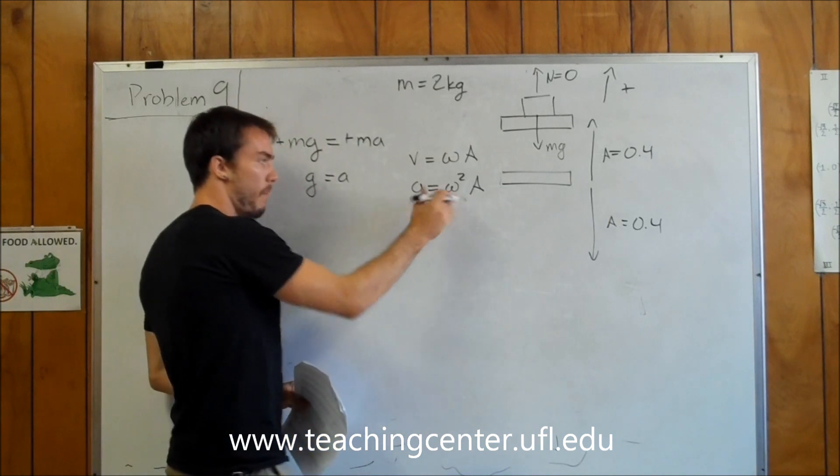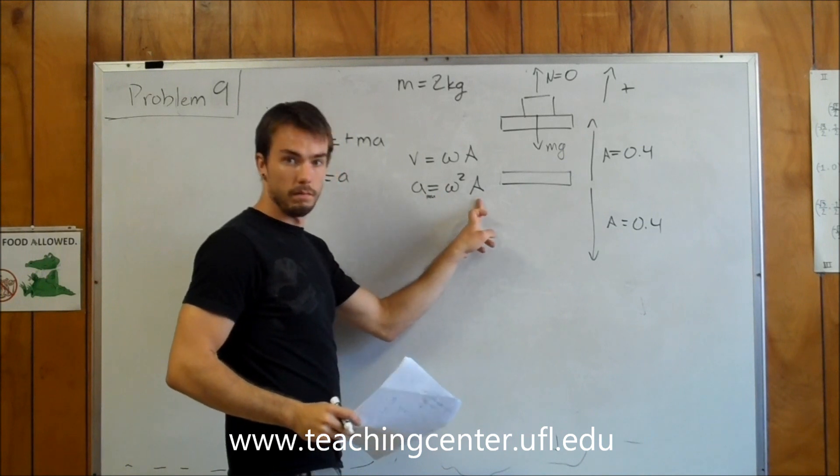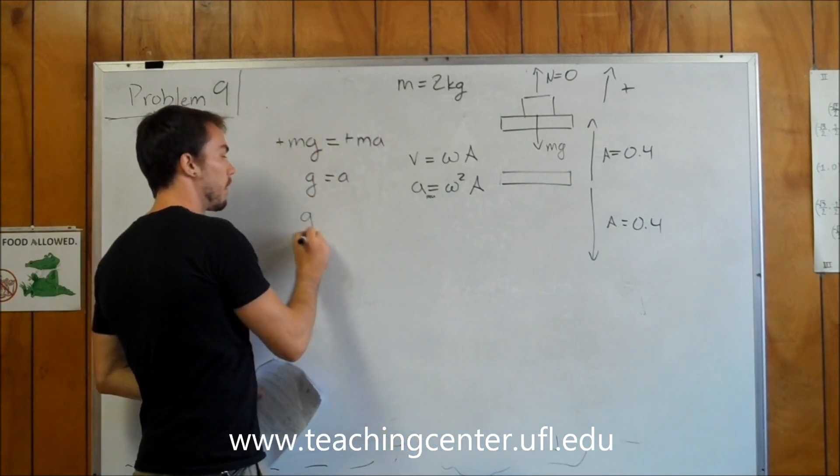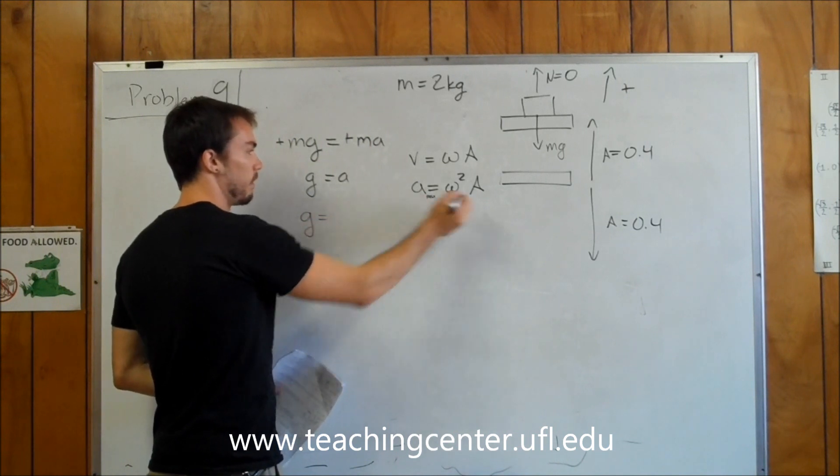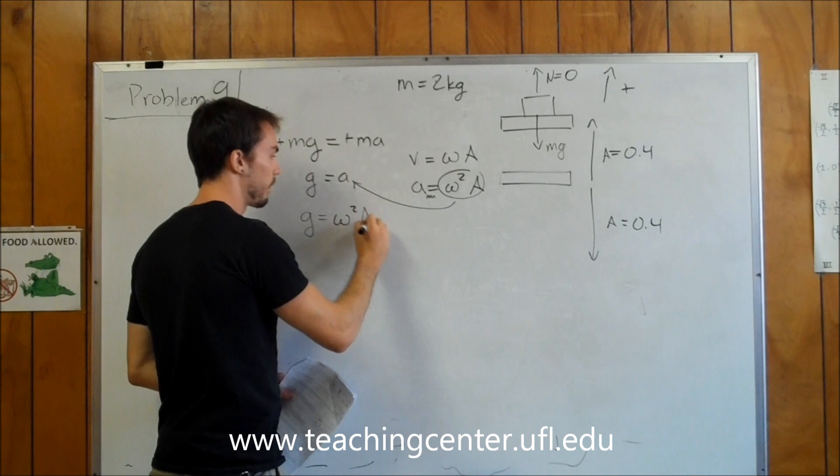So this is our maximum acceleration. At any point it occurs at omega squared times A. So we can go to this equation and say that g now, plugging this in for acceleration, is equal to omega squared A.